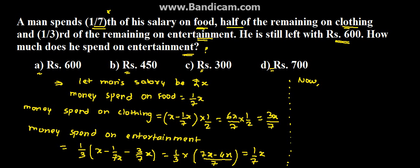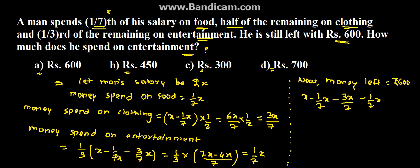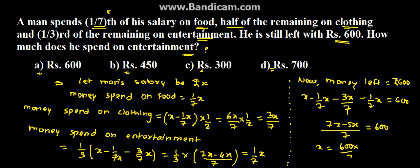After spending money on entertainment, money left is rupees 600 as given in the question. The money left is X minus 1/7 X minus 3/7 X minus 1/7 X, which equals 600. So 7X minus 5X upon 7 equals 600, giving X equal to 600 into 7 upon 2, which comes to rupees 2100.